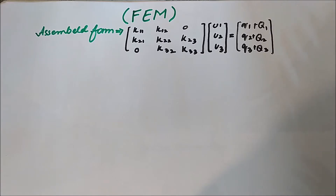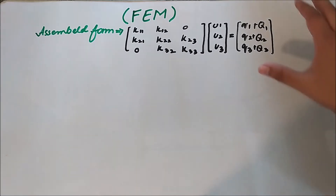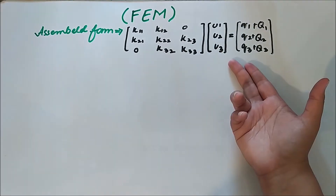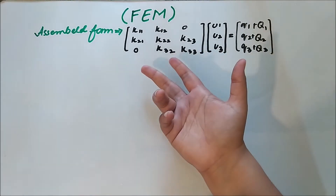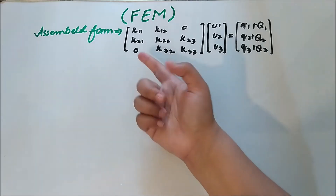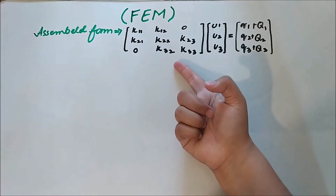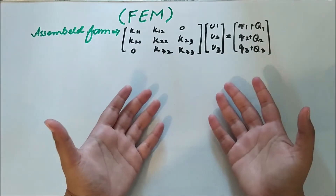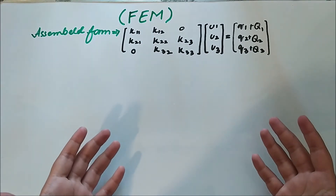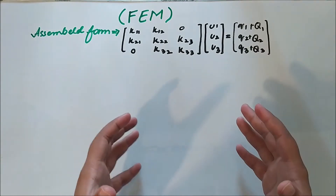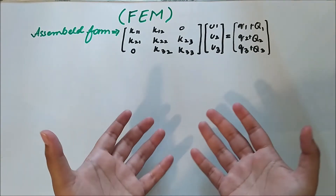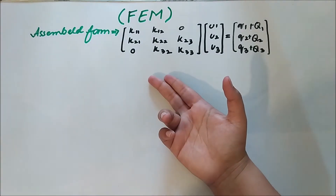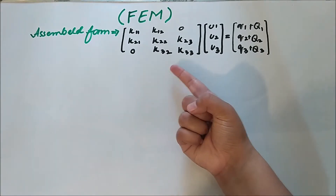Hello everyone, this is Da from eAcademy. In the previous video we assembled our system into three matrices. There is no superscript in any of these because we are in the global system — we assemble them from the local system and elevate them into the global system.